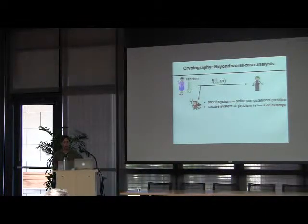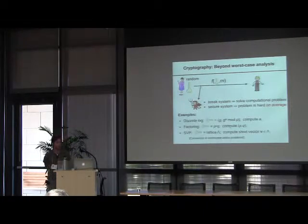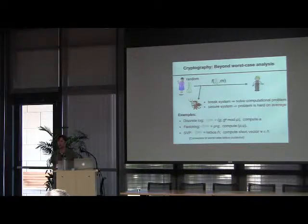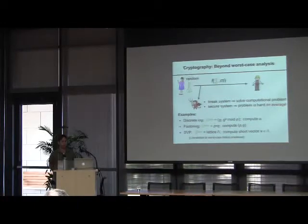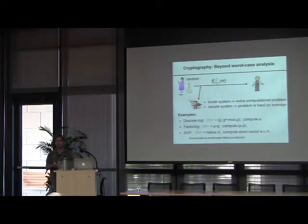In particular, if the system is secure, this means that the problem is hard on average for the distribution of keys that Alice uses. Some problems that we look at in public-key cryptography: there's the discrete logarithm problem, where given an integer mod p raised to some exponent, compute the exponent. The factoring problem — decompose a number into its prime factors. Or the shortest vector problem — given a lattice, compute the shortest vector, or up to some constant or polynomial factor, the shortest vector. These are all problems that, on average, have been used with average-case distributions to construct public-key cryptosystems.